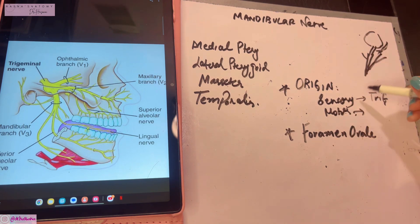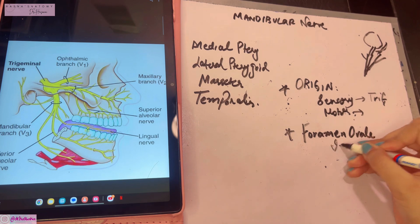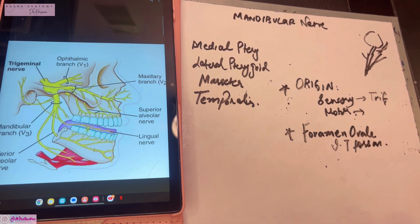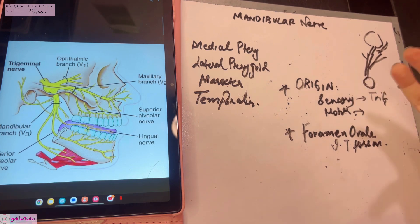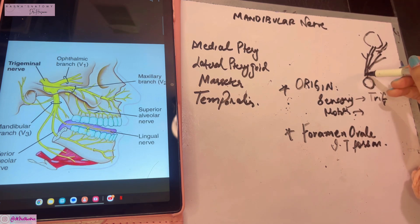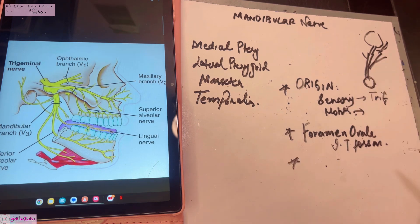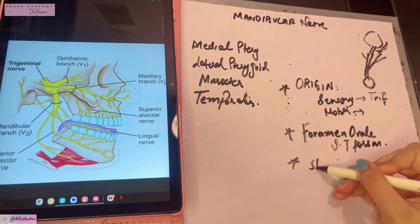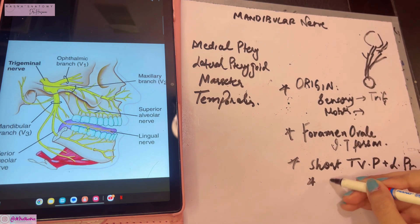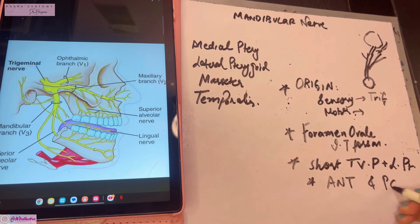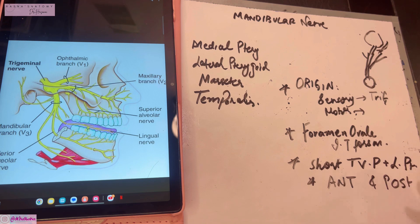So the origin has two phases: first the sensory and motor roots, then when they pass through the foramen ovale into the infratemporal fossa, the mandibular nerve's main trunk is formed. Just below the foramen ovale in the infratemporal fossa lies the otic ganglion, a parasympathetic ganglion associated with the nerve. The nerve then runs a short course on the tensor veli palatini and deep to the lateral pterygoid, before dividing into anterior and posterior trunks.